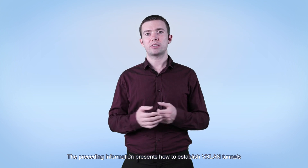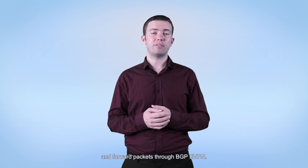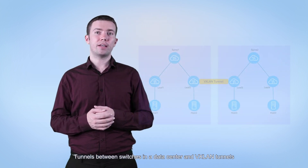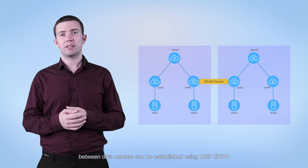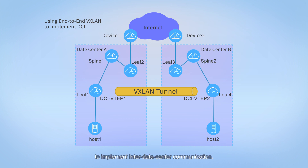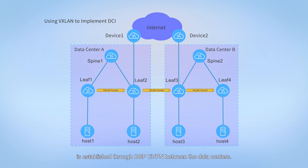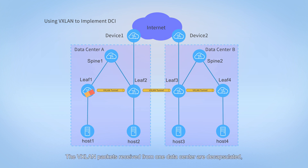The preceding information presents how to establish VXLAN tunnels on switches and enable switches to learn MAC addresses or routes and forward packets through BGP eVPN. Tunnels between switches in a data center and VXLAN tunnels between data centers can be established using BGP eVPN to implement inter-data center interworking. For example, in the E2E mode, an E2E VXLAN tunnel is established and MAC addresses or routes are transmitted through BGP eVPN between two data centers to implement inter-data center communication. In the segment VXLAN mode, a VXLAN tunnel is established through BGP eVPN in each of the two data centers and another VXLAN tunnel is established through BGP eVPN between the data centers; VXLAN packets received from one data center are decapsulated, encapsulated, and then sent to the other data center.